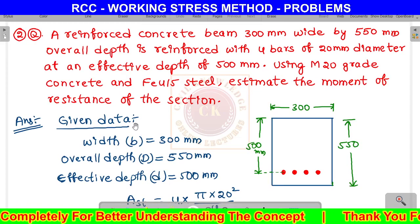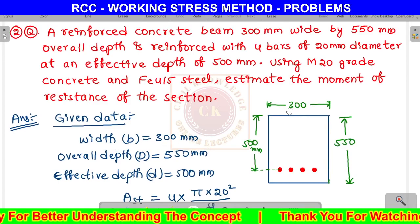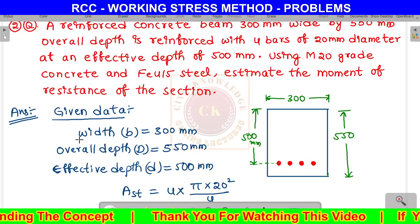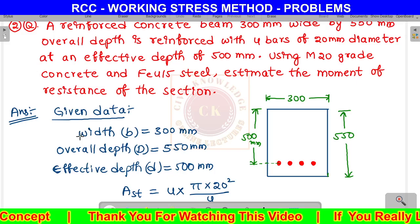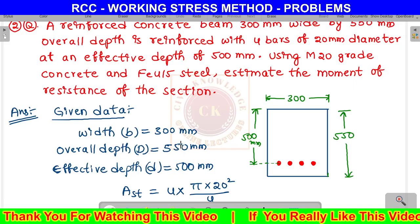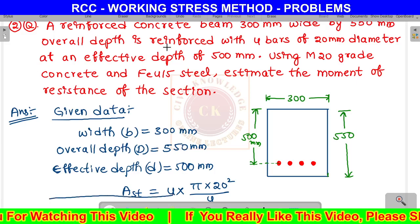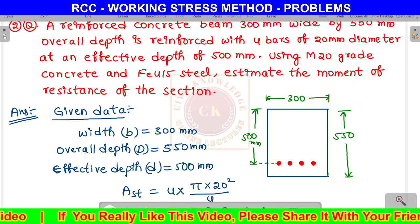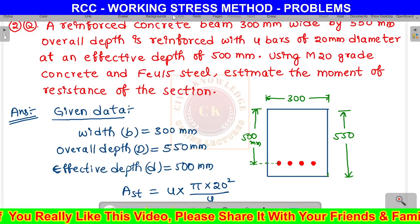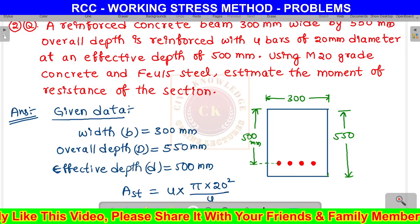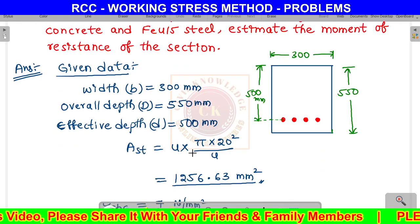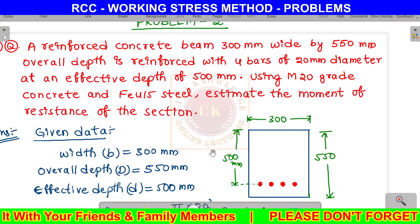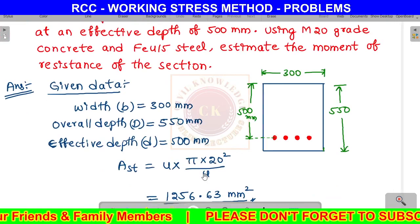Given data: width b equals 300 mm, overall depth D equals 550 mm. Area of tension steel Ast equals 4 bars of 20 mm diameter, which is 4 times pi d squared by 4, giving us 1256.63 mm squared.